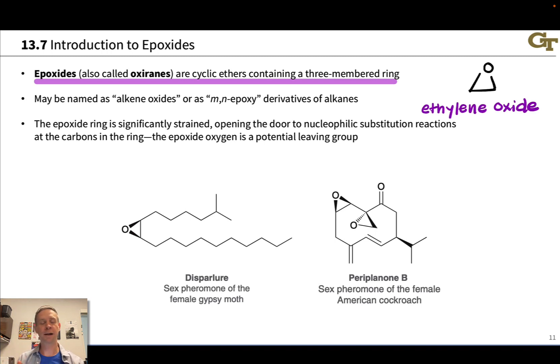The strain that's built into the epoxide ring makes these compounds reactive, and it opens the door to nucleophilic substitution reactions because that epoxide oxygen has the potential to act as a leaving group. That makes the two carbons in the epoxide ring relatively electrophilic. Nucleophiles can attack at these carbons and open the ring via electron flow like this. The bottom of this slide just shows two examples of epoxides in nature. Two sex pheromones of the female gypsy moth and the American cockroach apparently include epoxides. Makes you wonder if those epoxide rings are integral to their mechanism of action.